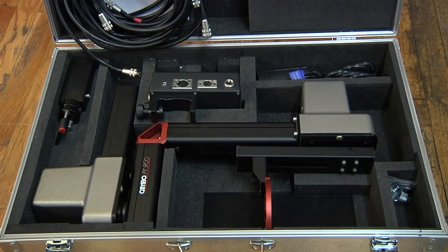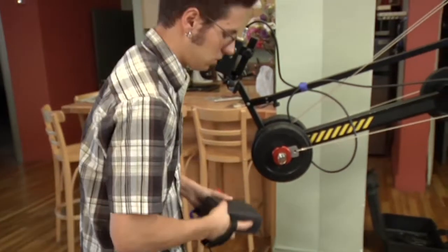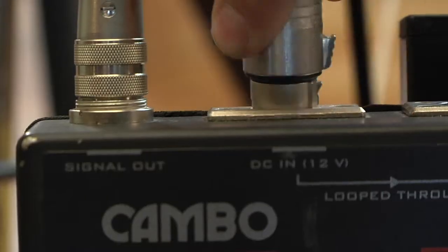The motorized head and joystick can be powered from AC or DC power. When out in the field, batteries are usually easier, and a 12-volt source will do. It plugs in here.